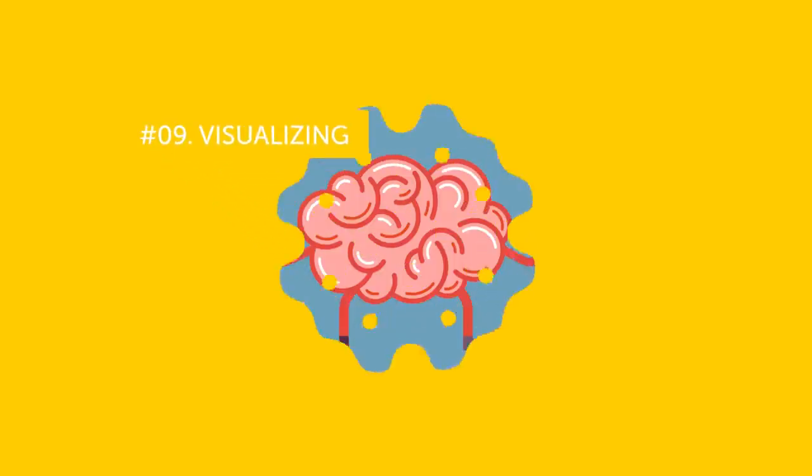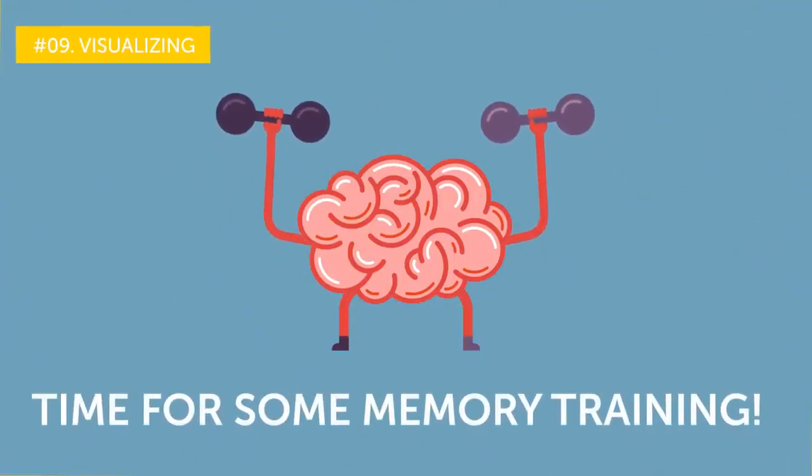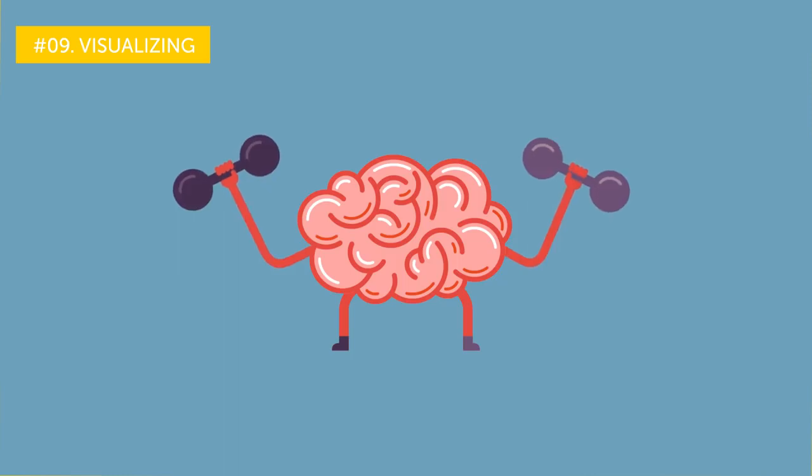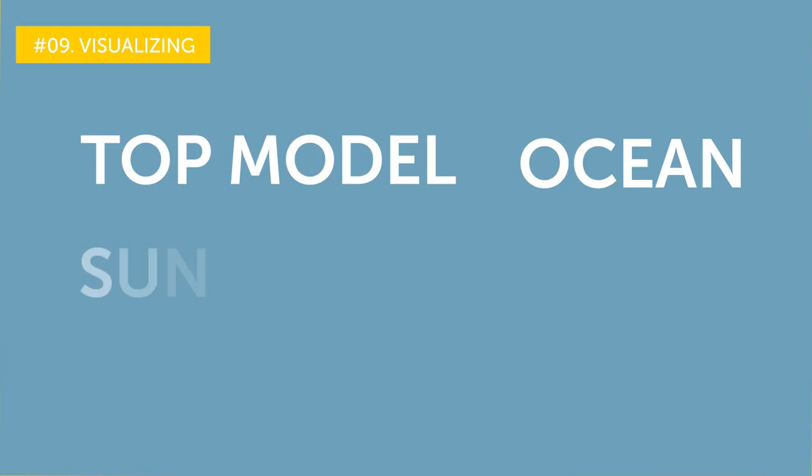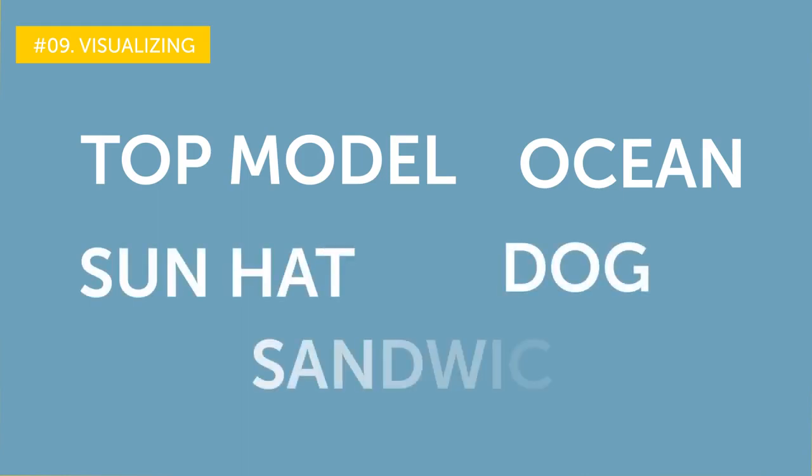Number nine. Visualizing time for some memory training. It is an essential part of any brain workout. Can you quickly memorize the words you see on your screen? Top model, ocean, sun hat, dog, sandwich.